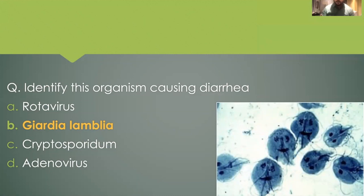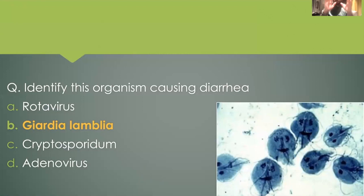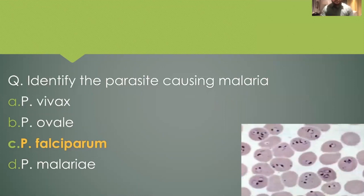The next question was: identify this organism causing diarrhea. Looking at the image, this human-looking image with eyes, mouth, etc. is nothing but the trophozoite of Giardia lamblia, described as tennis racket-shaped. We talked about the falling leaf motility, and I had posted how this motility looks in the MIST group on Telegram.